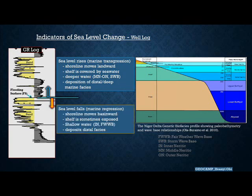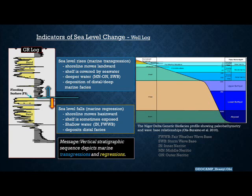On the flip side, when the sea level falls, that means we have a marine regression. When that happens, the shoreline has moved further basinward — away from the land onto the sea. The shelf is sometimes exposed, giving room for the deposition of shallower water facies, which in this case could be from inner neritic water depths and typical fair-weather conditions.